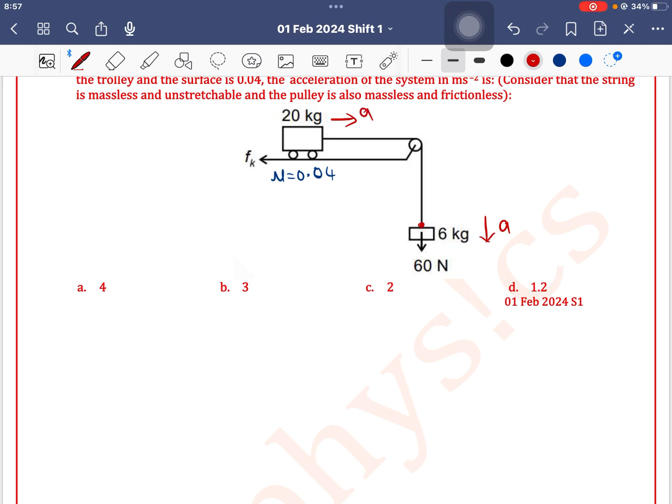So if I write equation for 6 kg, as 6 kg is moving in downward direction, 60 newton is bigger. Then the force minus the force, 60 minus T is equal to 6 into a.